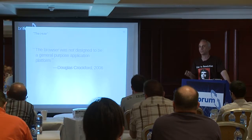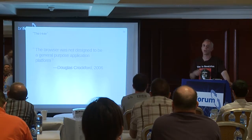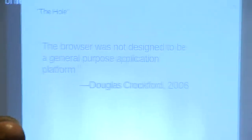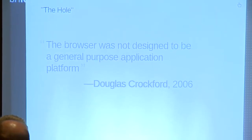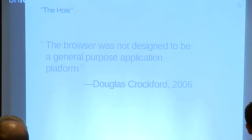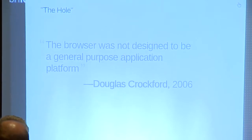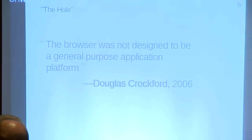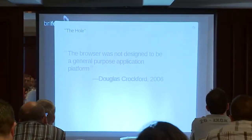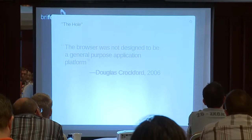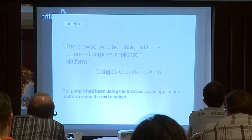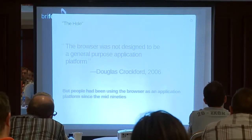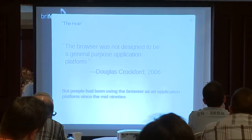In order to understand how HTML5 came about, we need to understand why it came about. I don't know how many of you are familiar with Douglas Crockford — he's really one of the gods of web development, does crazy stuff with JavaScript, and is the inventor of JSON. Back in 2006, he wrote that the browser was not designed to be a general-purpose application platform. The reason he wrote that was because people were using it as an application platform — I personally used it as an application platform almost ten years before he said that.